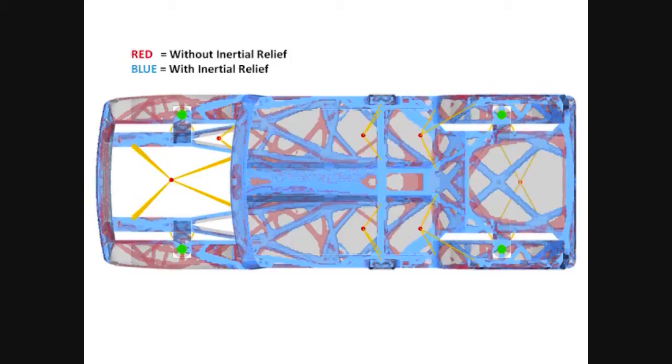Comparing the topology results with and without inertia relief, it seems plausible that some structure exists due to the placement of the boundary conditions.